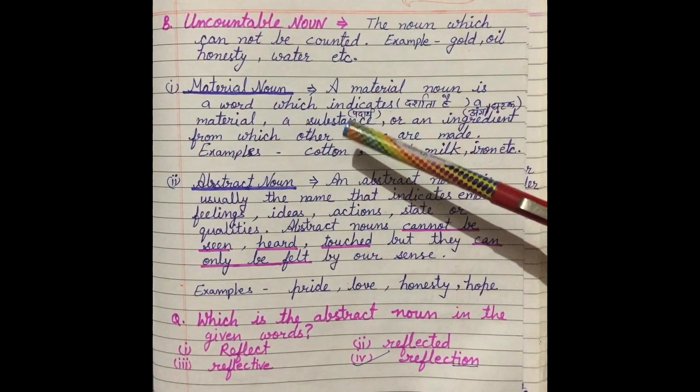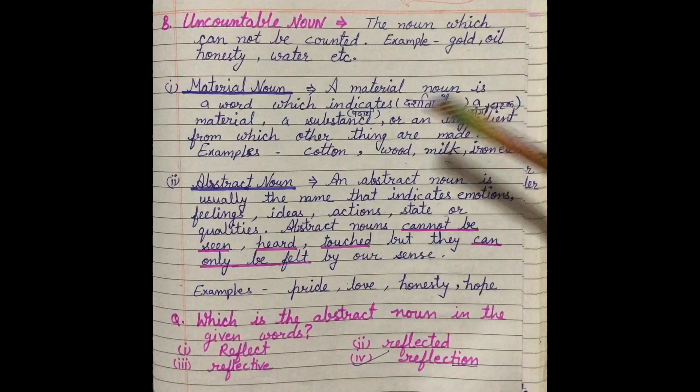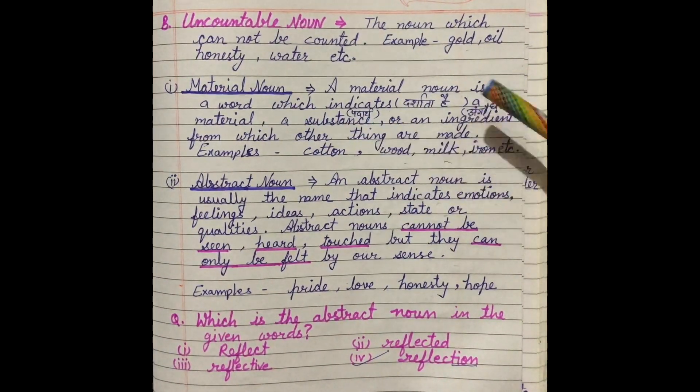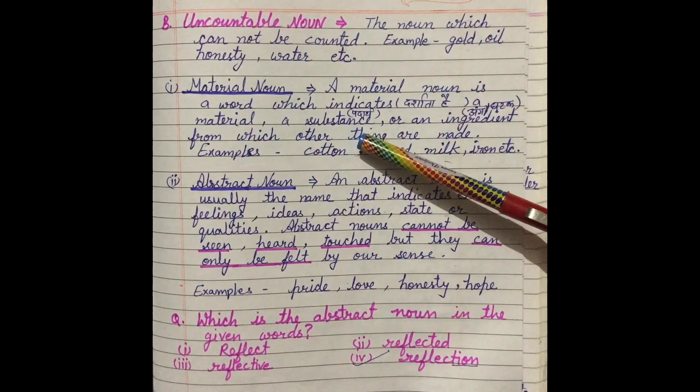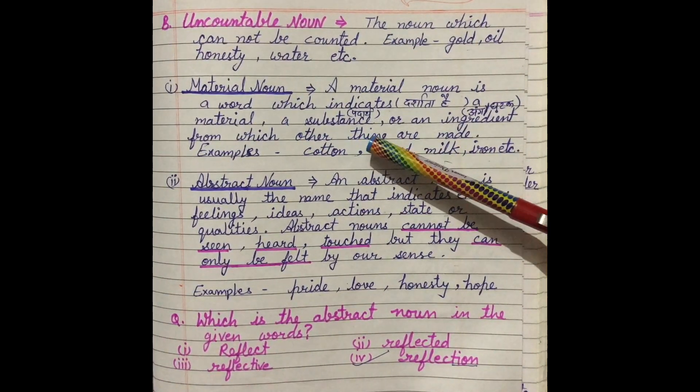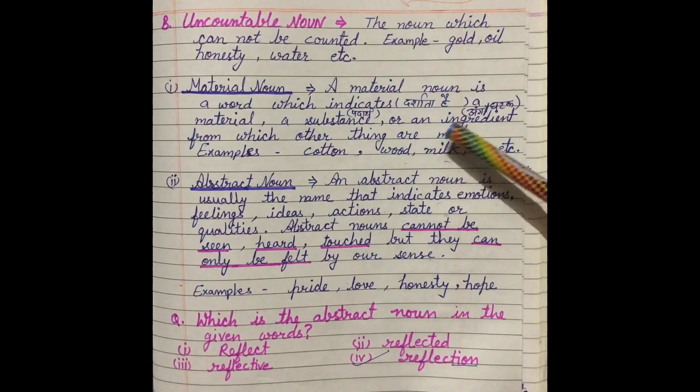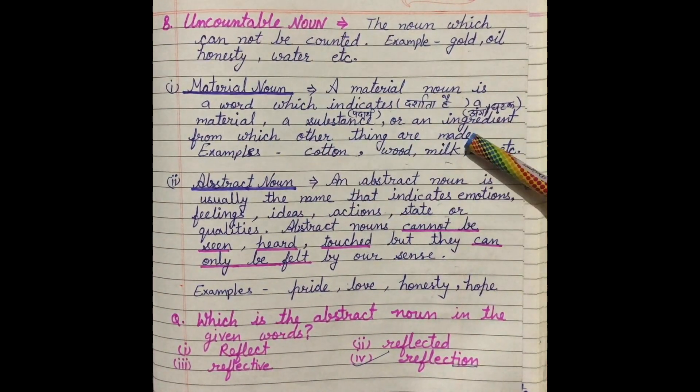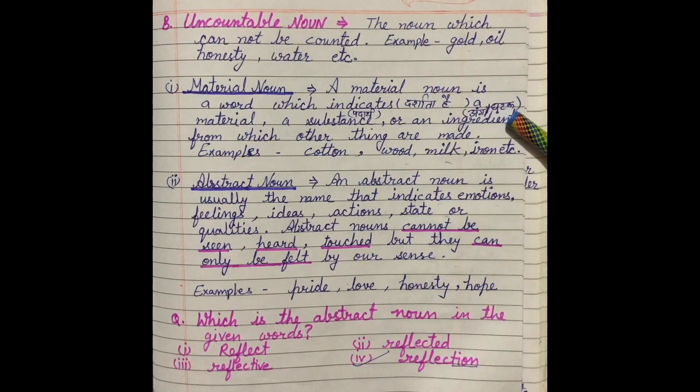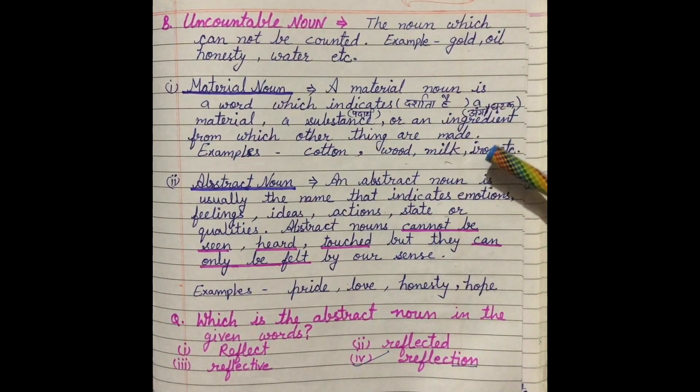First we will see material noun. A material noun is a word which indicates, jo darshata hai material kisi padaarth ko, a substance. An ingredient from which other things are made, this is called material noun.